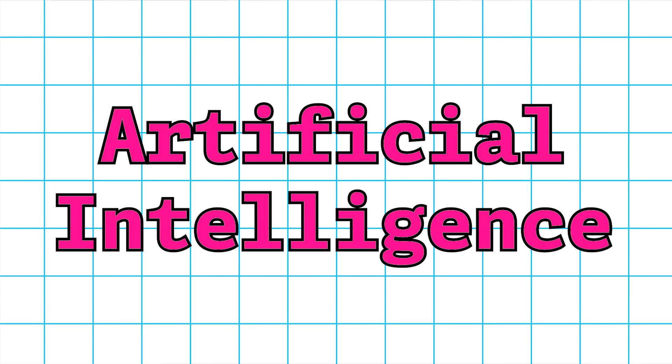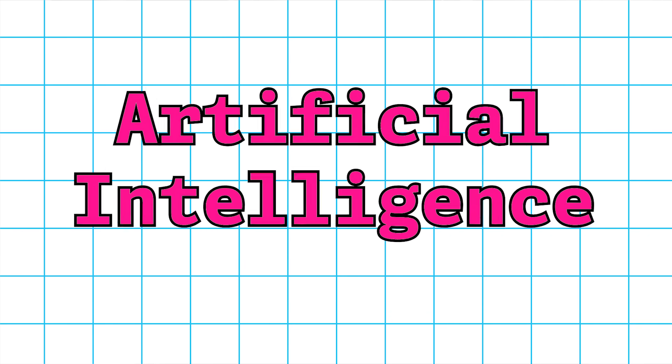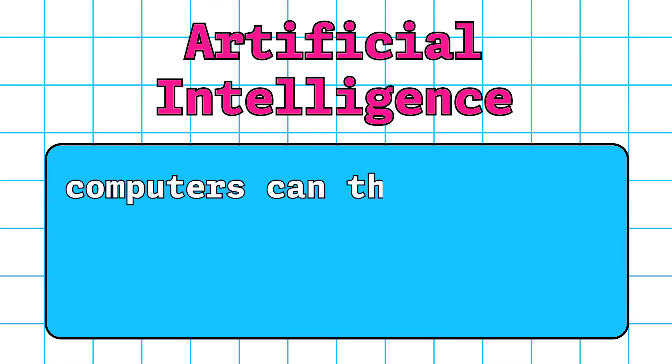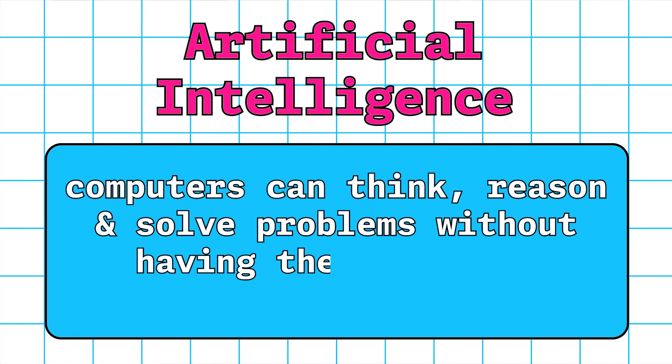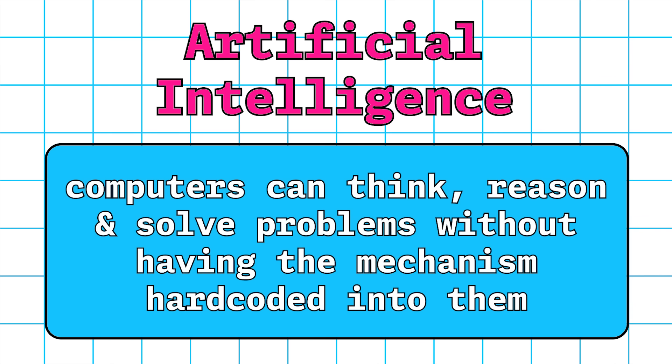But we're going to have a little bit of a history lesson on what AI is and how it works. AI stands for artificial intelligence, and it's basically this idea that computers can think and reason and solve problems without having the mechanism for solving those problems hard-coded into them. They kind of learn how to solve the problems based on some sort of training. And it's the focus of the field of machine learning, which uses different tools and methodologies to train computers to essentially think.